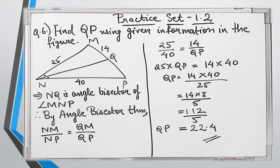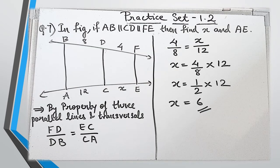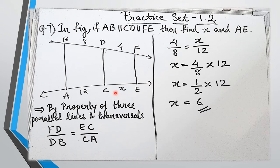Let's move on to question number 7. As you see in the diagram, there are three parallel lines and two transversals included, so we are going to use that property — the last theorem we learned. The question says: find X and AE in the figure, given AB is parallel to CD is parallel to FV. We have to find X, which is the length of CE, and then the length of AE.